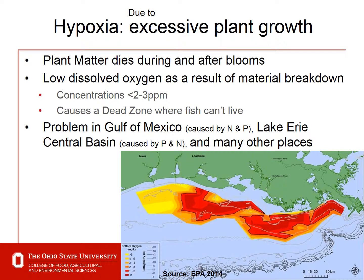Hypoxia is due to excessive plant growth — plant matter dies during and after blooms, and the blooms are due to excessive amounts of nitrogen, phosphorus, and other nutrients. As a result, we get very large growth of plant life, and as that plant material dies, we get low dissolved oxygen from the breakdown of that material. That leads to very low concentrations of oxygen, perhaps less than two to three parts per million. When that happens, we create a dead zone where fish can't live — it's a very nice habitat for plant growth but not for fish.